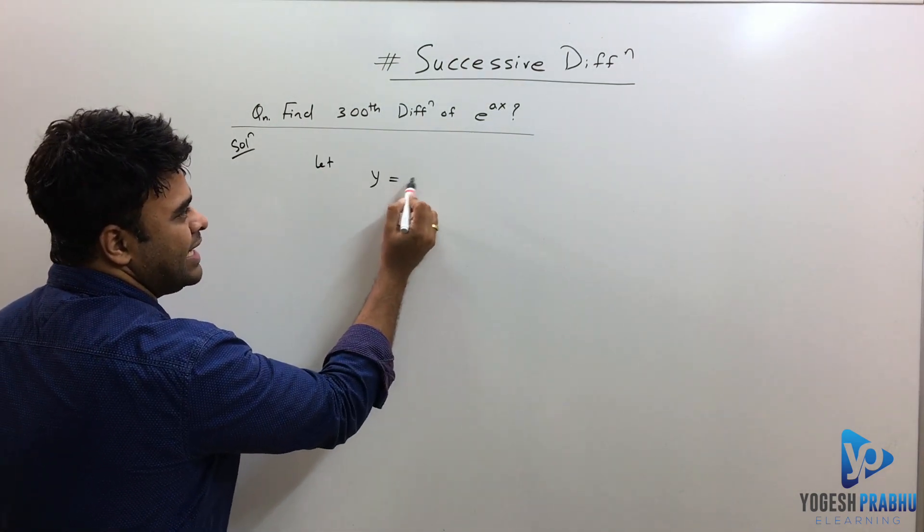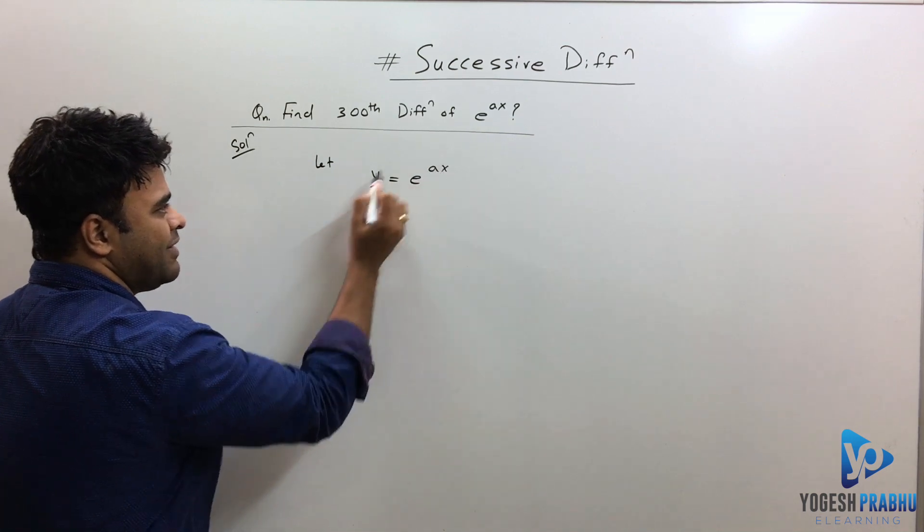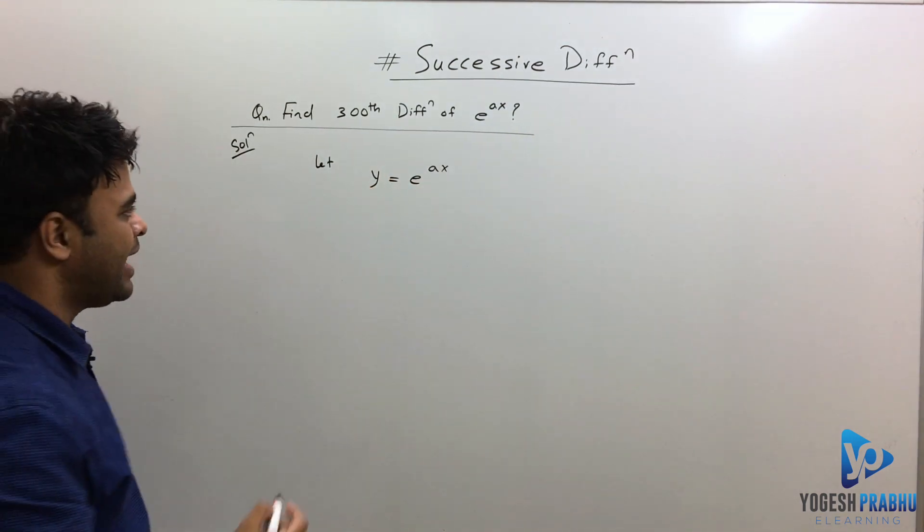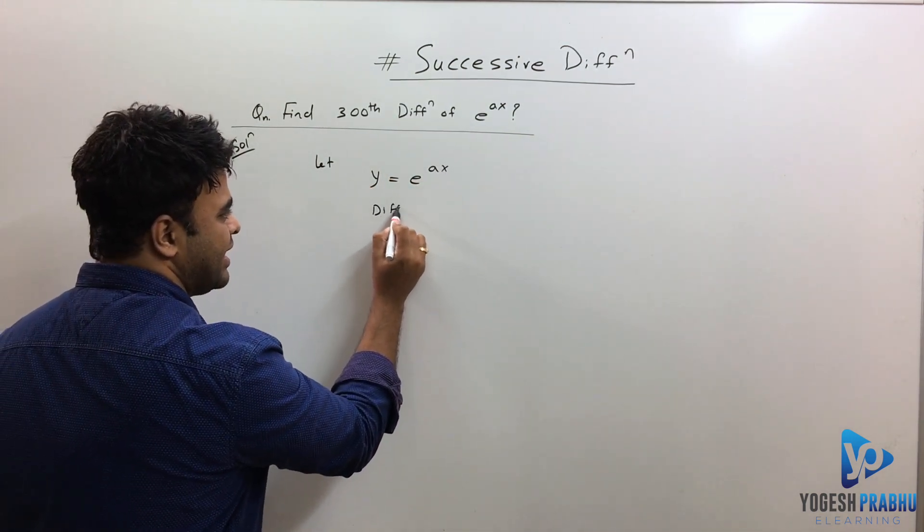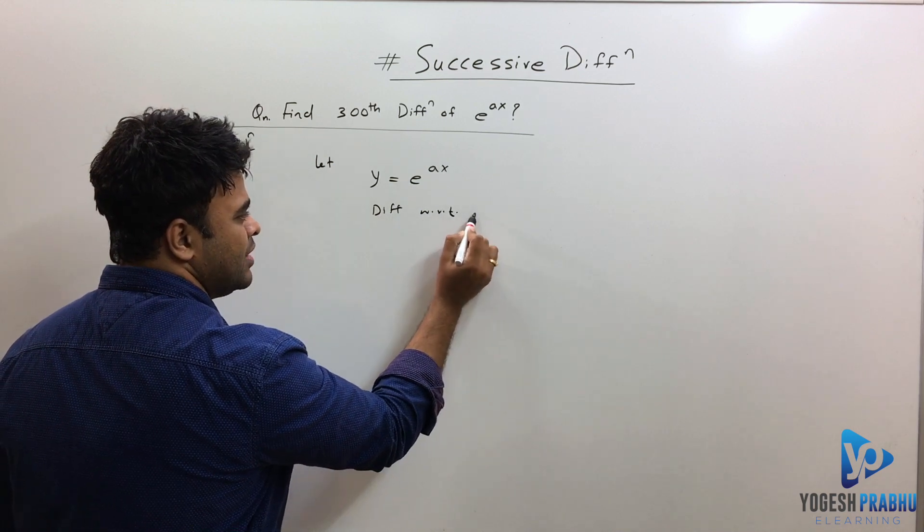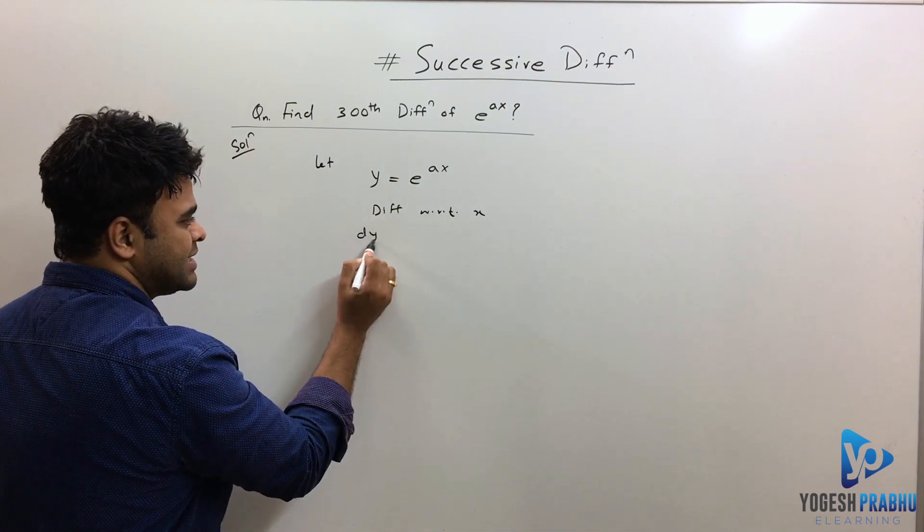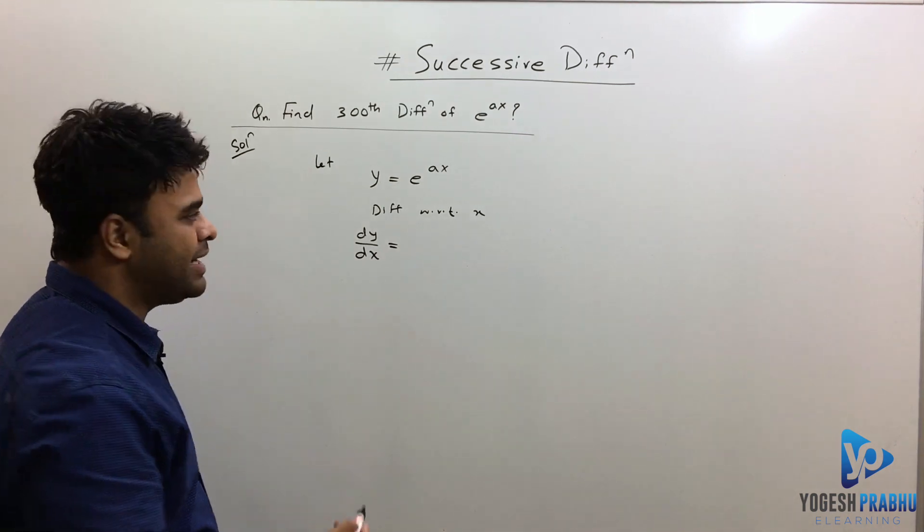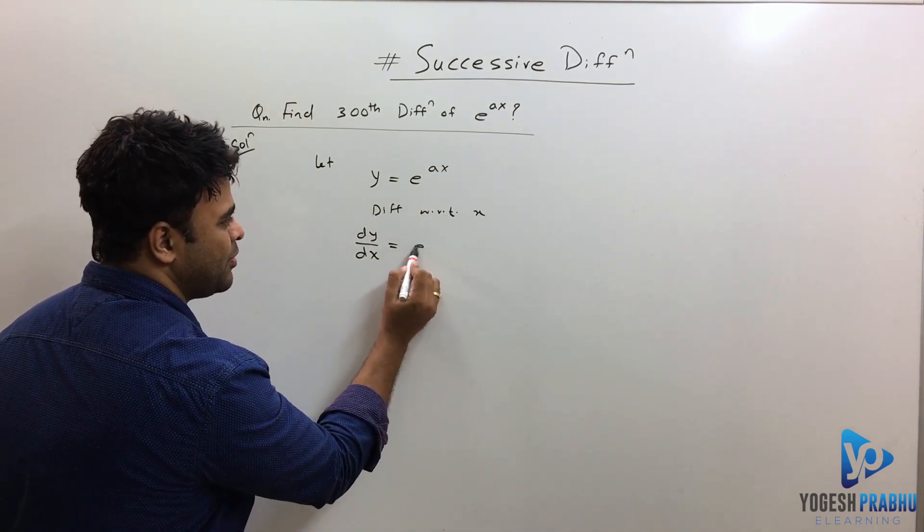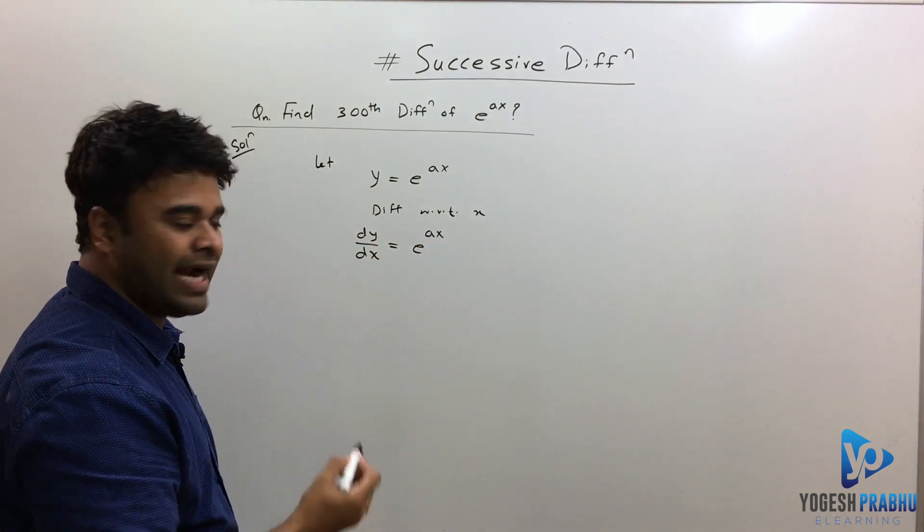So if I assume that e raised to ax as y, and if I differentiate this with respect to x, I'll get the first derivative, that is dy/dx. And dy/dx, the derivative of e raised to ax is going to be e raised to ax, and if I apply chain rule I'll get a. That's the first derivative.